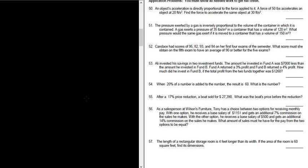Let's work out number 56. As a salesperson at Wilson's Furniture, Tony has the choice between two options for receiving monthly pay.